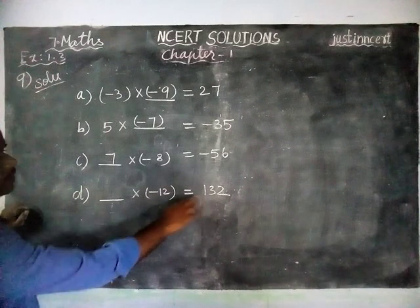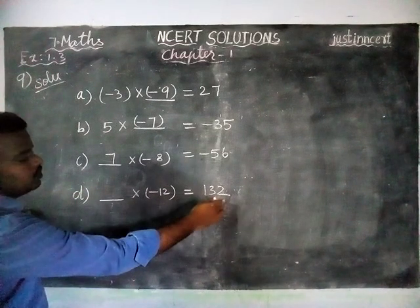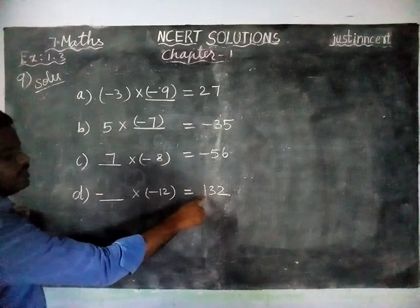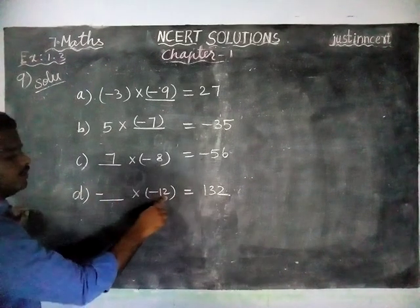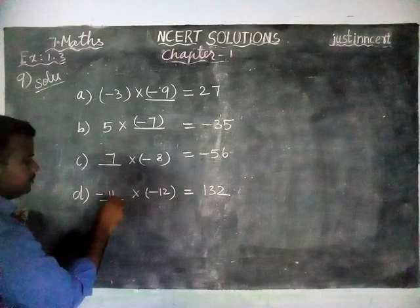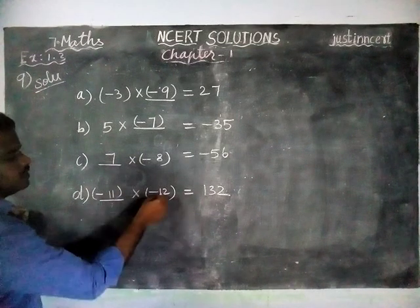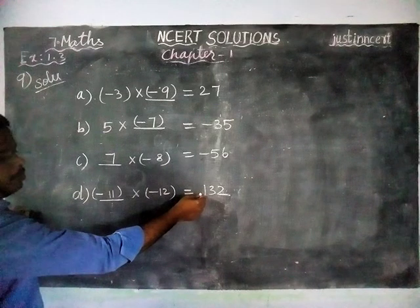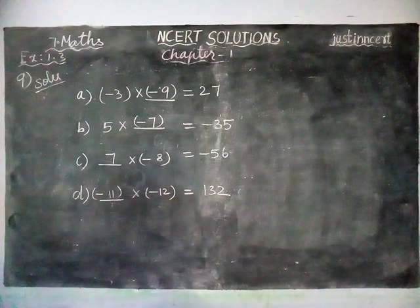Next, ___ × (-12) = 132. This is plus 132. Here we have one minus, so definitely this number is minus. When we are dividing 132 by 12, we are getting 11. So 11, 12 × 11 = 132. Minus into minus equals plus, so we are getting plus 132.